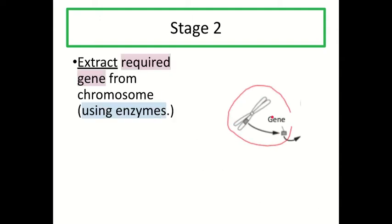In stage two, now that we've found the gene that has the code for the required protein, we need to actually take that gene out of the chromosome — we don't need the whole chromosome, just the gene. So we extract the required gene from the chromosome using enzymes. We've identified the gene we want in the human chromosome and we have now extracted just that gene.